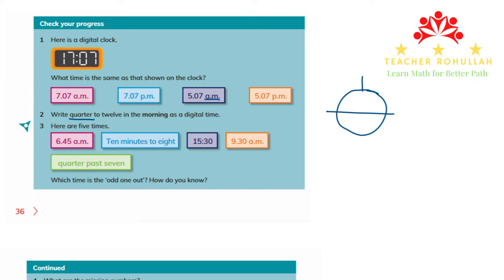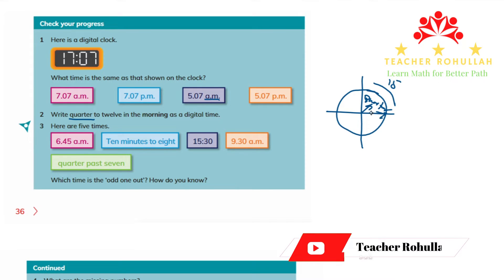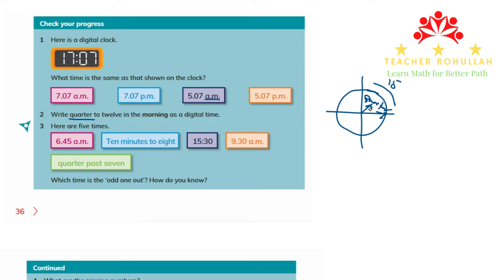In this analog clock, we can divide it into four parts. Each part shows 15 minutes, and 15 minutes is called one quarter. So if the time is showing 1:15, we can say it is quarter past one.